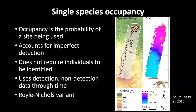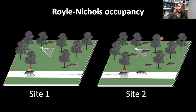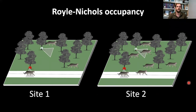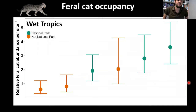In my study I used the Royle-Nichols variant of the single-species occupancy model. This model assumes heterogeneity in species abundance between sites drives detection probability — sites with more animals are more likely to yield a detection. I illustrated this with a diagram: Site 1 has three cats and two cameras and is less likely to yield detections than Site 2 with many cats throughout the forest. This assumption is reasonable given the range of national parks, habitat types, and management regimes across my study.